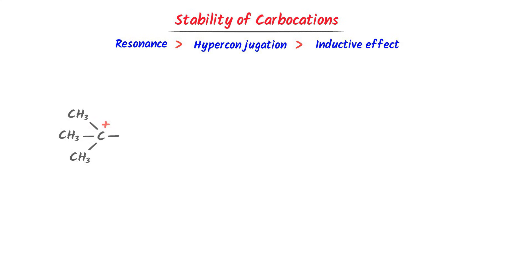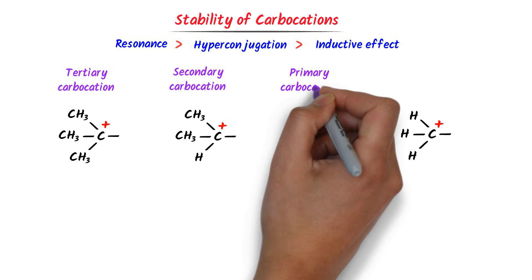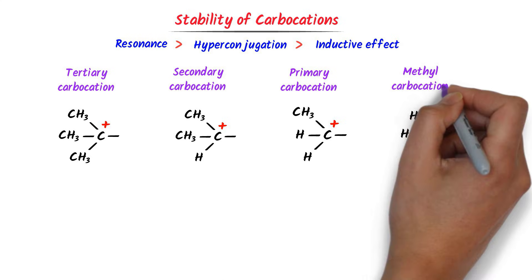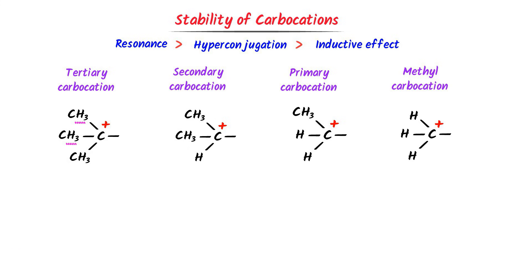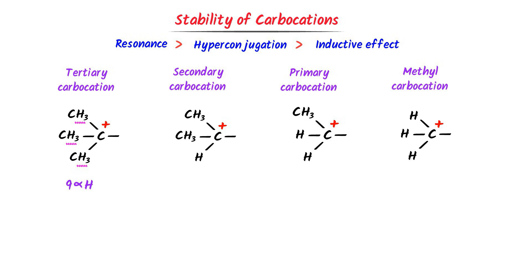We always follow this trend to decide the stability of any carbocation: resonance, then hyperconjugation, then inductive effect. Consider these carbocations. This is a tertiary carbocation, this is a secondary carbocation, this is a primary carbocation, and this is a methyl carbocation. In the tertiary carbocation, there are three sets of three alpha hydrogens, giving a total of nine alpha hydrogens. Hence, tertiary carbocation has nine hyperconjugated structures.